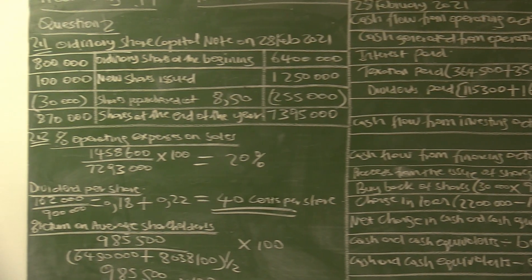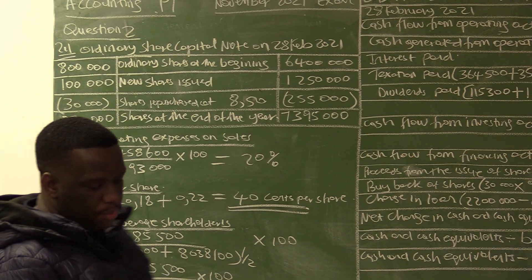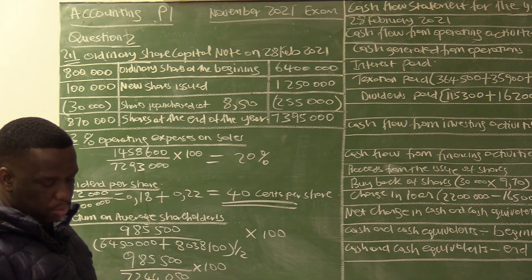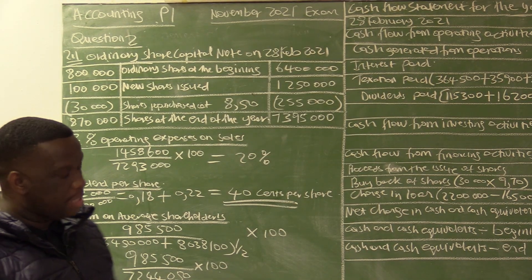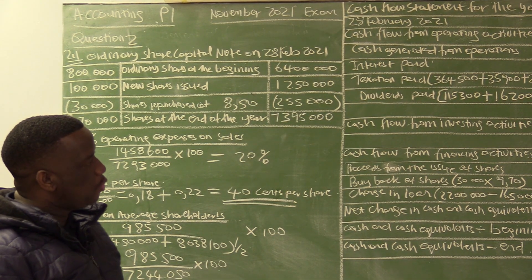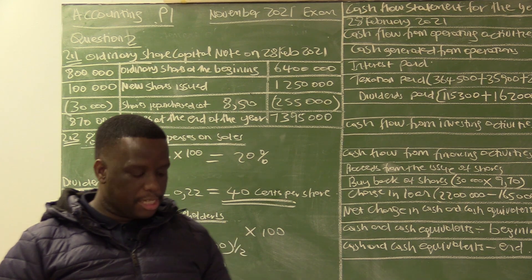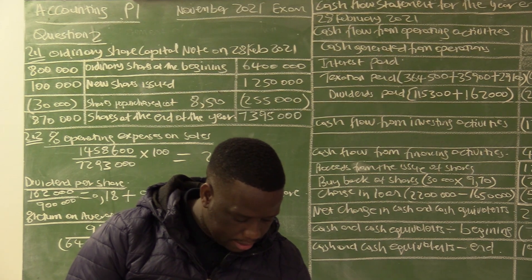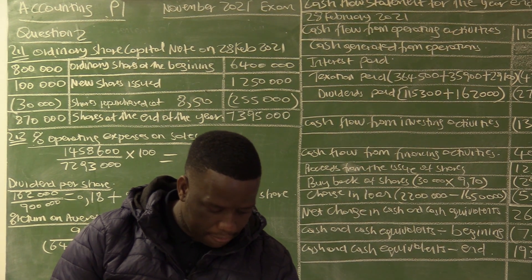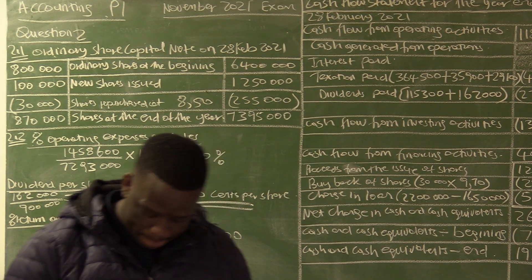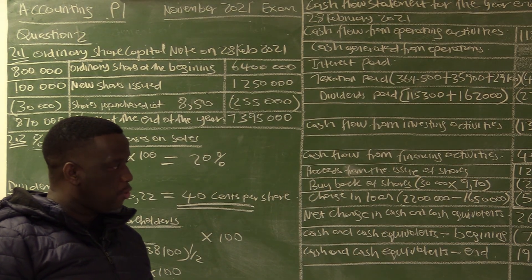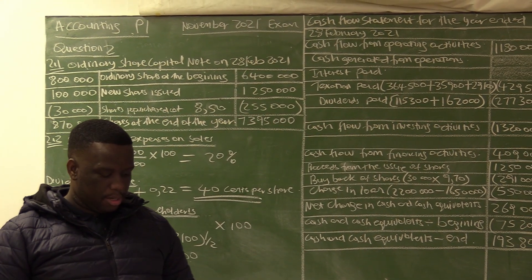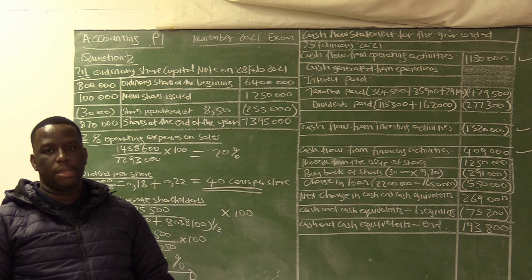This is the end of question two, which was based on share capital, financial indicators, and the cash flow statement — 35 marks to be completed in 25 minutes. We encourage students to have the question paper and calculator at hand and to do the calculations along with us on the board. Good luck on your studies. Thank you very much.